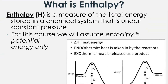So what is enthalpy? Enthalpy, which we represent using the variable H, is basically a measure of the total energy that's stored in a chemical system. We measure it under constant pressure — just as in Chem 20 with gas laws, if you want to measure one thing you have to keep other variables constant, like keeping volume and temperature constant to measure pressure.